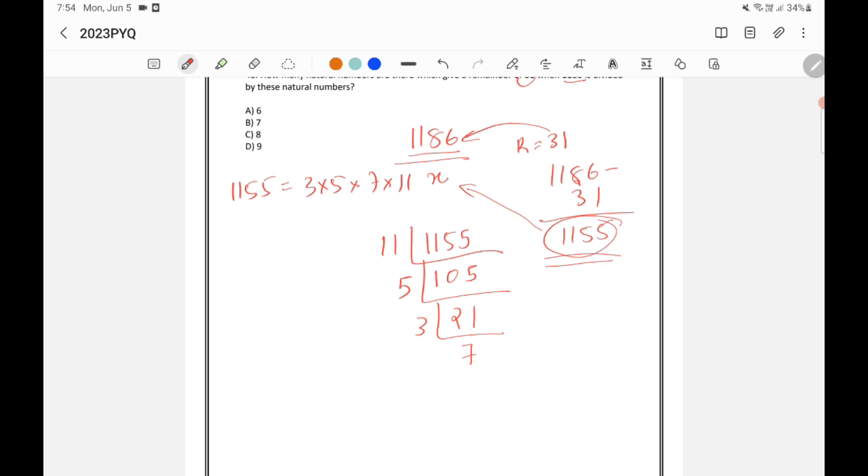Now we need to find out the factors of 1155. So 1155 is equal to 1 into 1155. So 1 and 1155 are factors. Now we can also write it as 3 into 5 into 7 into 11. We just need to say that it is a number. If you do this calculation it will take time, that's why I am not doing it.